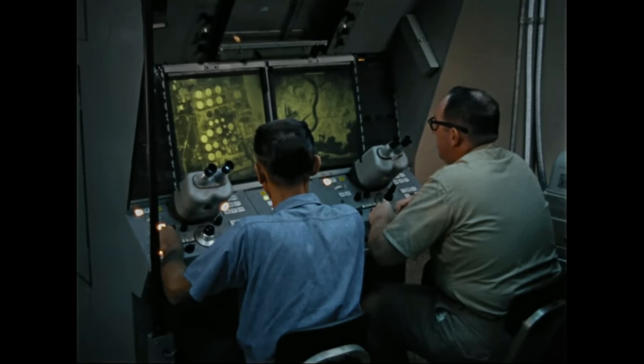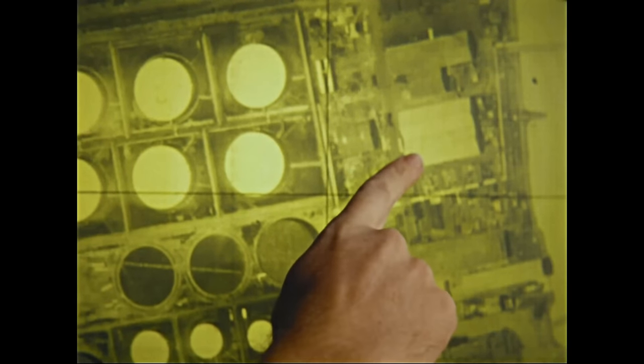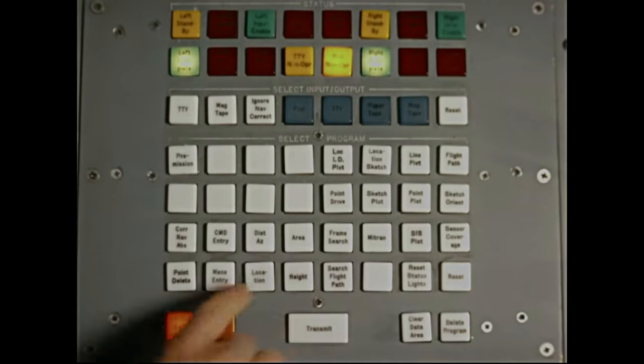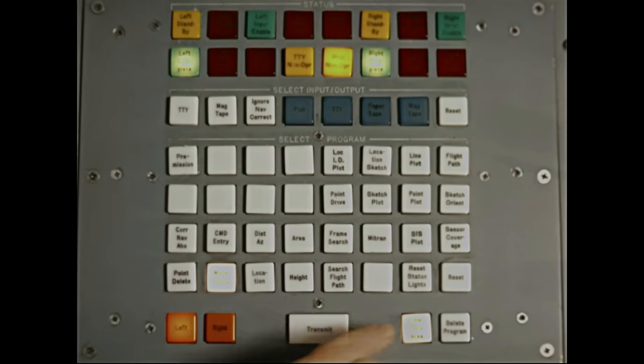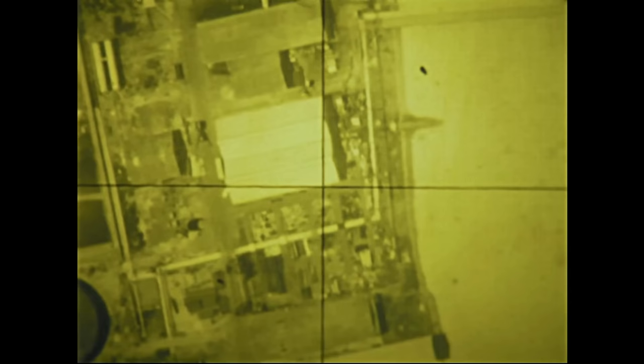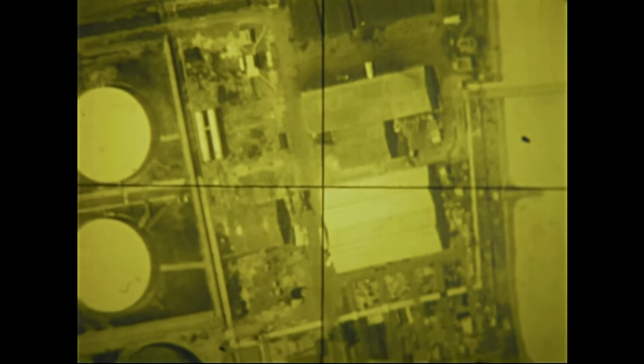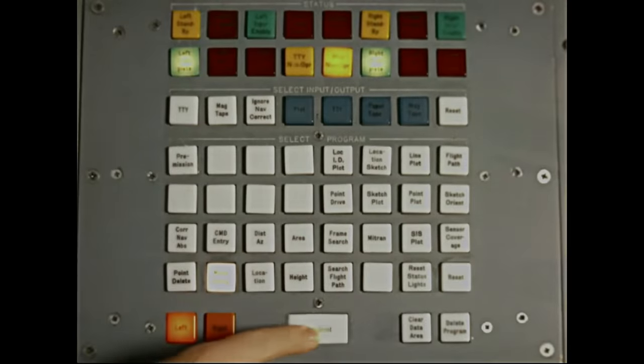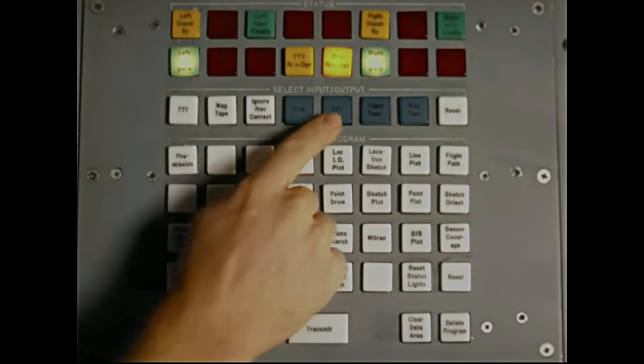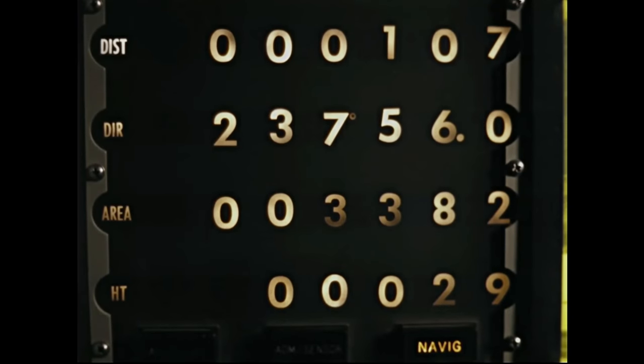Now suppose the operator is interested in determining the area of a building associated with the same tank. He again initiates the mensuration entry program to clear the previous film coordinates from the computer, then stores the coordinates for each corner of the building. In this program, the computer will handle up to a six-sided enclosure. He then executes the area program and the computer gives the answer: 3,382 square feet. If desired, the information is also obtainable as a teletype printout.